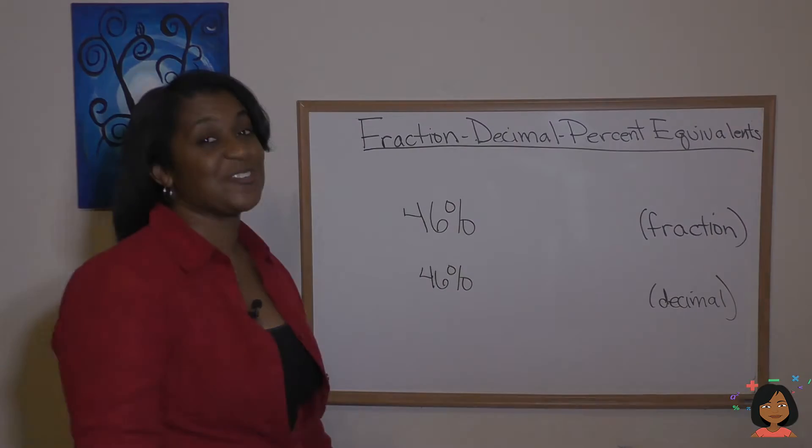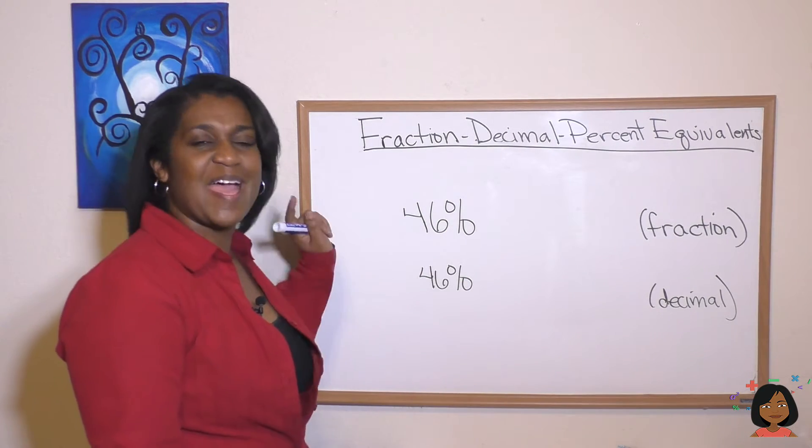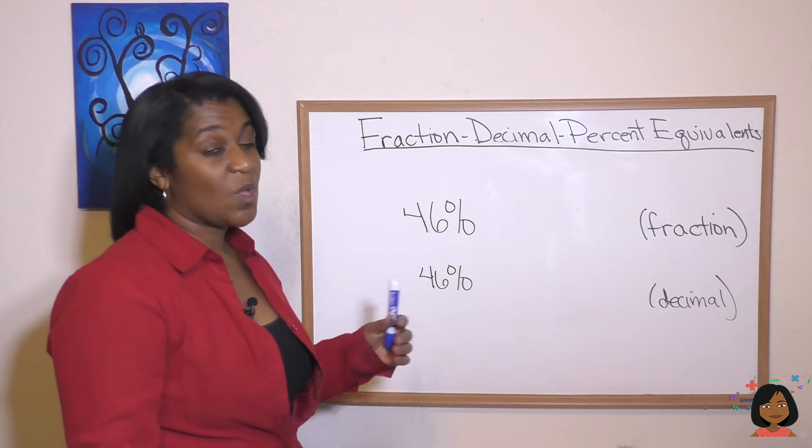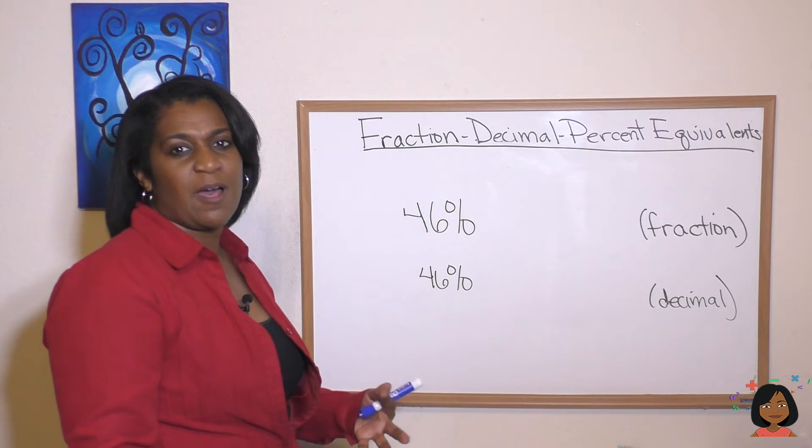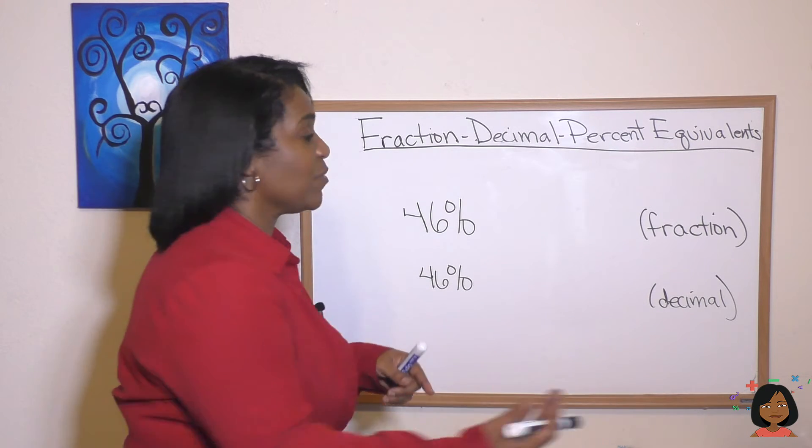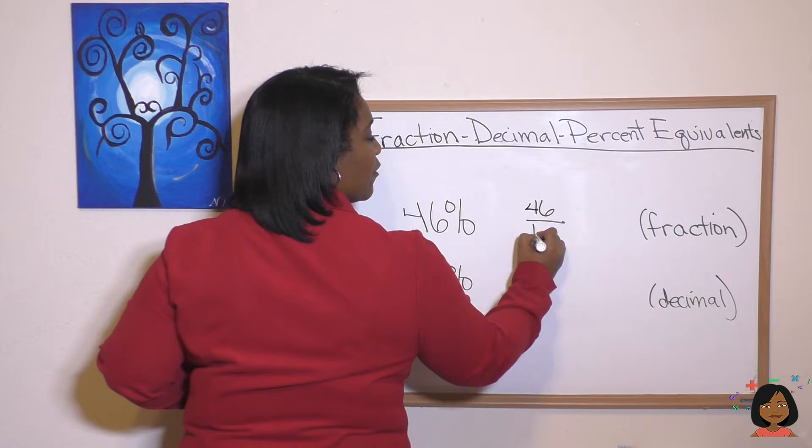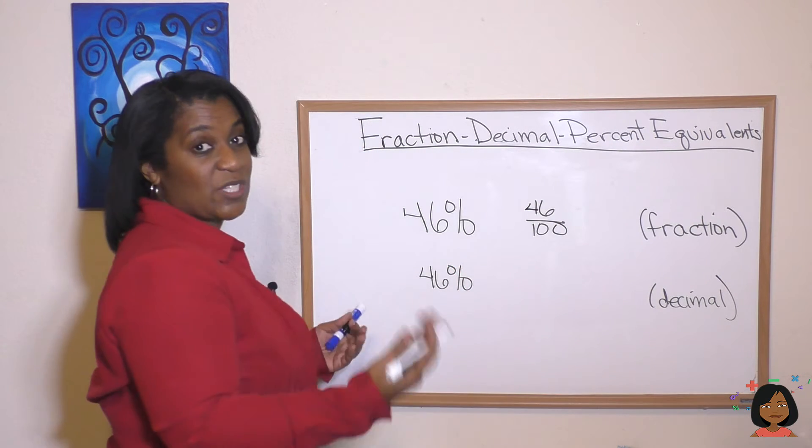Let's try the last one. Here's the last one. So we're going to take a percent move to a fraction and a percent move to a decimal. Well we know that a percent is really a piece of a whole, right? It's always out of 100. So to get our fraction we're just going to put our 46 over 100 which can be simplified.